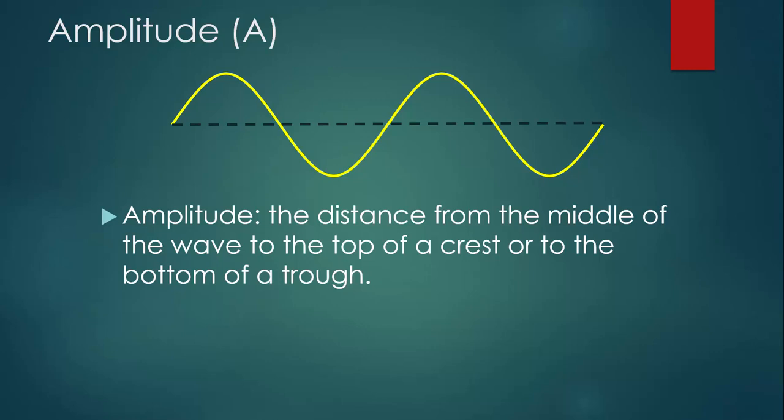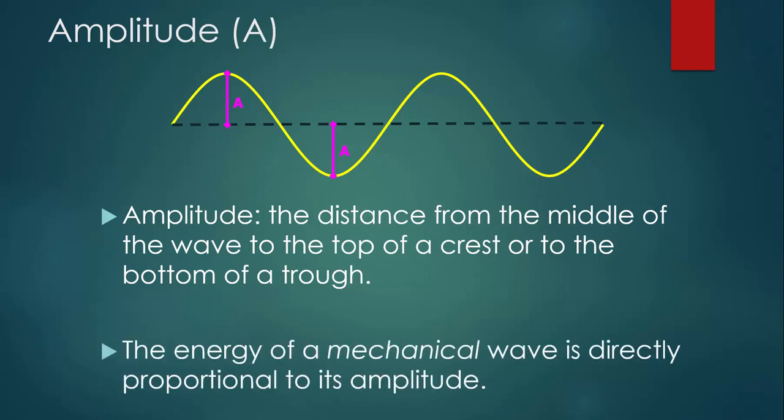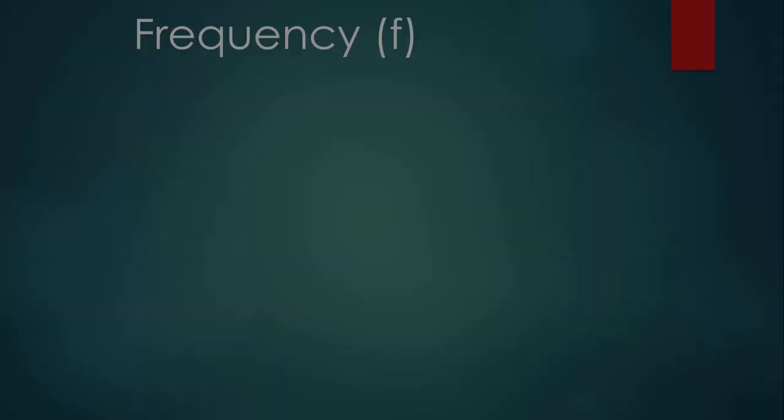Amplitude is basically the height of a wave, but we have to measure it very specifically. It's the distance from the middle of the wave, that dotted line, to the top of a crest or to the bottom of a trough. This means that we can measure the amplitude here or we can measure the amplitude here. Really, the only other thing that you'll need to know about amplitude is that the energy of a mechanical wave is directly proportional to its amplitude.